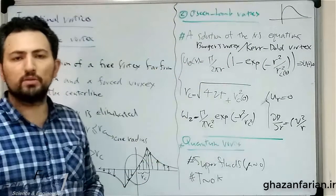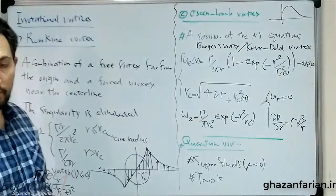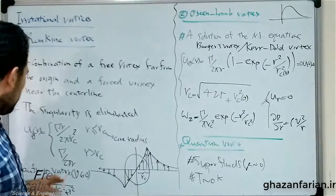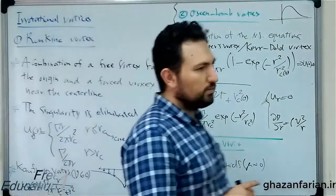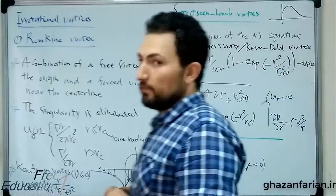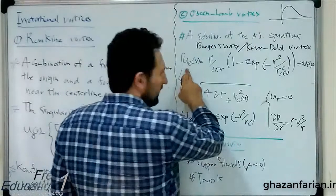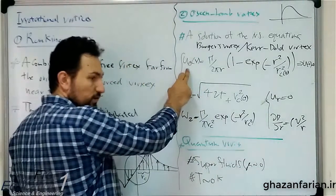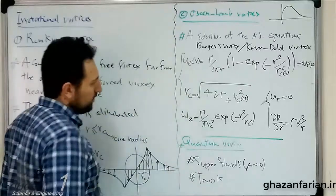Here we don't have viscosity in our relations, but the Oseen-Lamb is a vortex which deals with the decay of the vortex because of viscosity. This is the velocity. Again, the radial velocity is zero. The radial component of the velocity is zero, and this is the circumferential velocity.